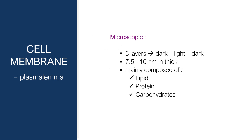Microscopically, the structure of the cell membrane consists of three layers: dark, light, and dark layers. These three layers have a thickness of 7.5 to 10 nanometers. The cell membrane is composed of lipid, protein, and carbohydrate molecules. The dark layer is the head of the phospholipid, while the light middle layer is the tail of the phospholipid.